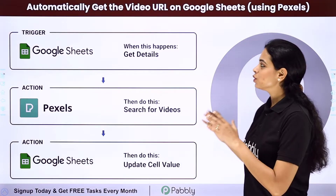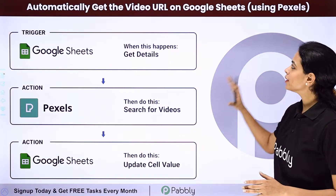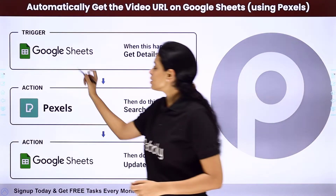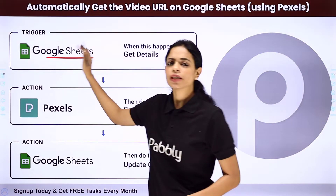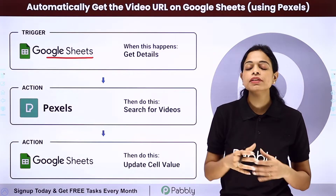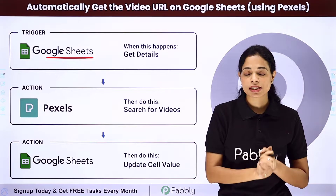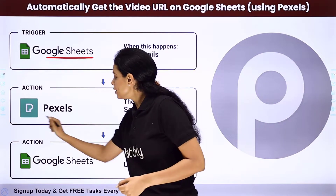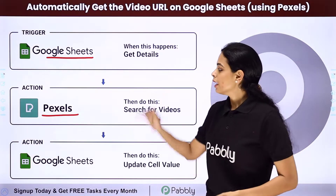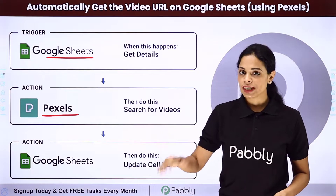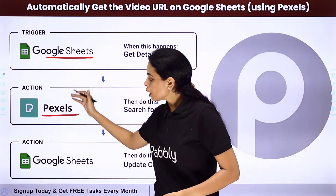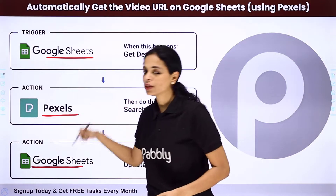In this video we are going to see how to automatically get the video URL on Google Sheets using Pexels. So let's say that you have got certain titles in your spreadsheet in Google Sheets, along with some keywords, and you want to find relevant videos with those keywords. You are using the Pexels application, where you can find high quality images and videos that are free and copyright free. Once you have found these links, you want to update your same Google Sheet with the links.